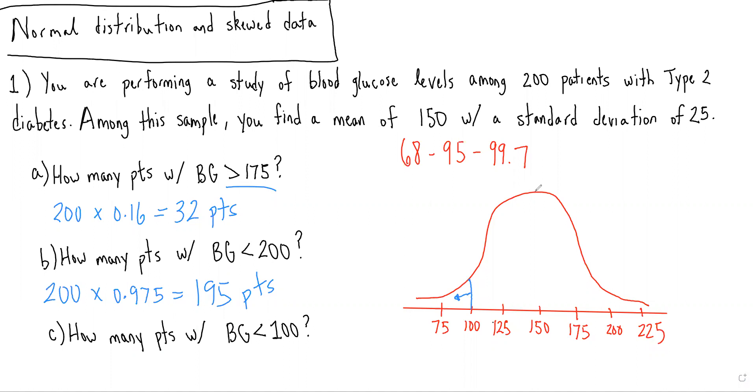And we see that this is basically the same as part B of the question, because again, we know 50% of our data lies to the right of the mean of 150. And because this is within two standard deviations of the mean, and we expect 95% of our data to fall within two standard deviations, this would be 47.5% of the data.